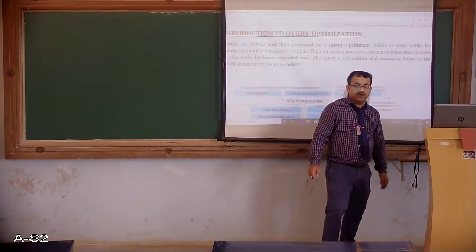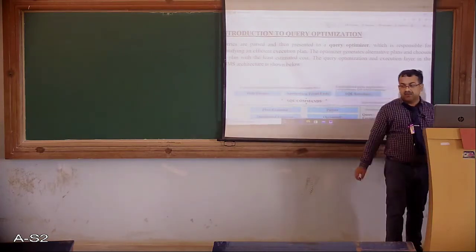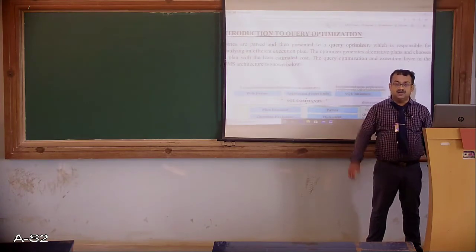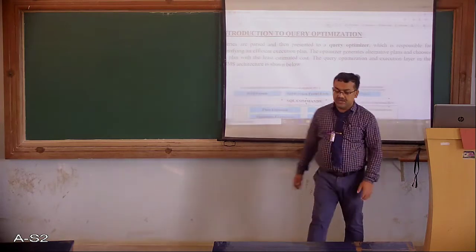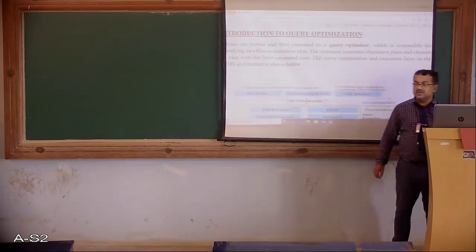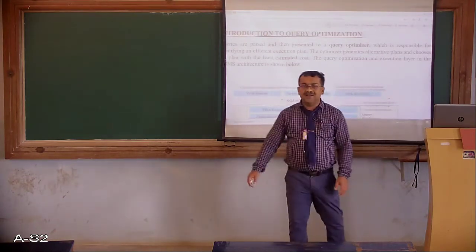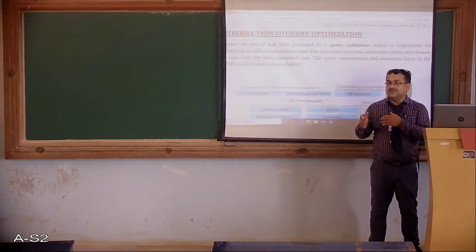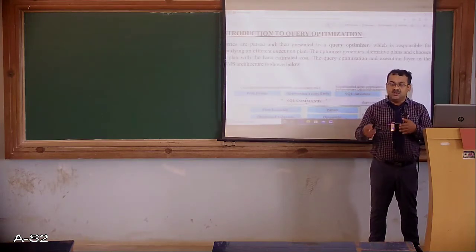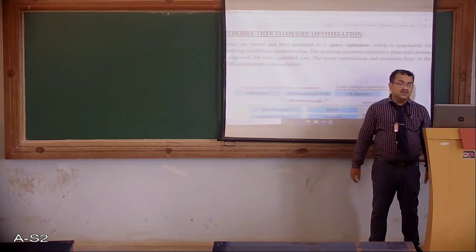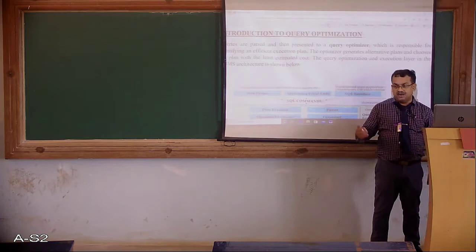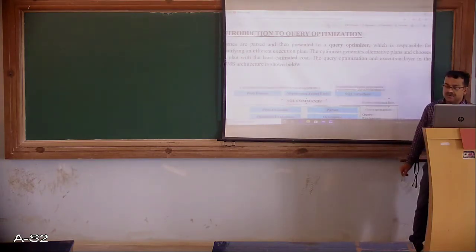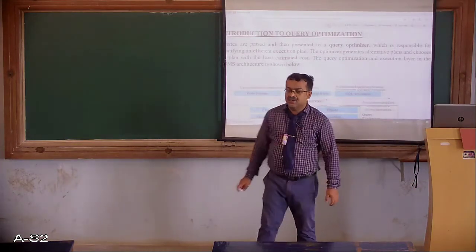In the last class, we discussed about query evaluation techniques — different techniques to evaluate relational operations for efficient execution of queries. Today we are going to discuss about query optimization, because in large databases where you have lots of data, users submit different requests which are processed in the back end as queries. There can be different variations of those queries, and the database system tries to optimize the execution of those queries. This is done by a component called the query optimizer.